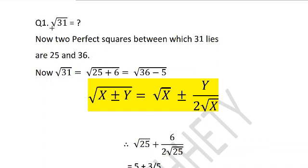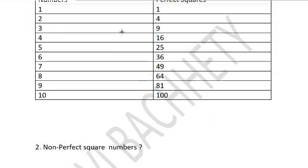Let us say I want to find square root of 31. Of course 31 is not a perfect square number. 25 is a perfect square number and 36 is a perfect square number but 31 is not a perfect square number.